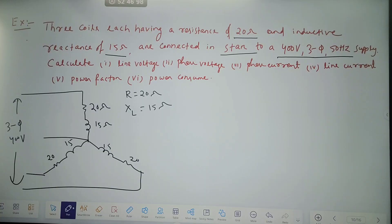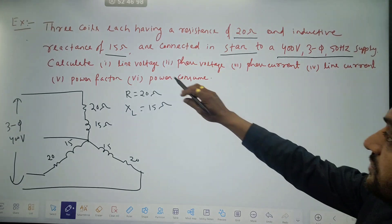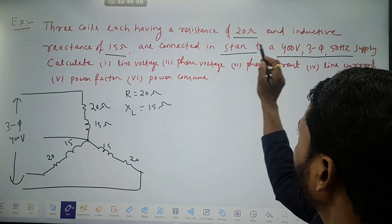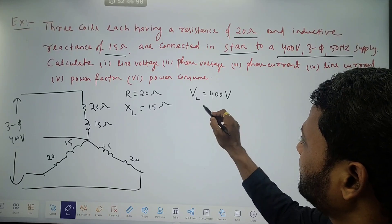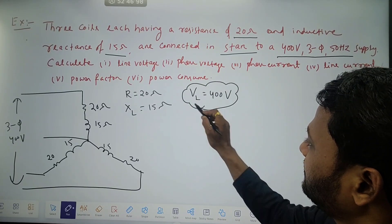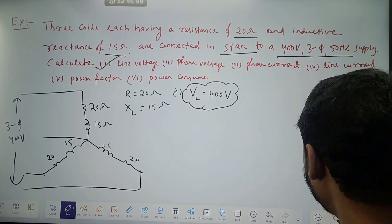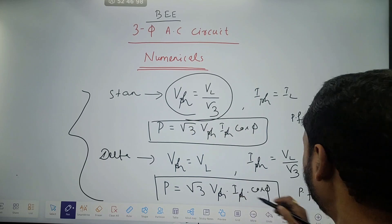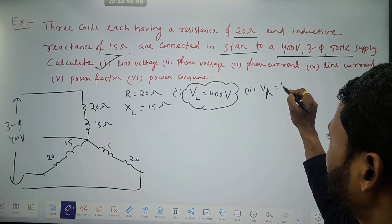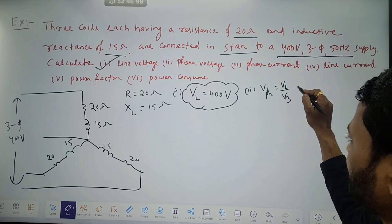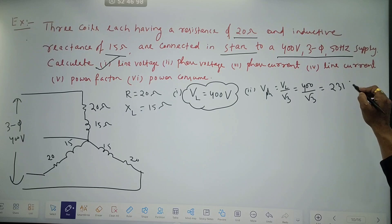So start with the question. We have to find out phase voltage, phase current, line voltage. First we will find out line voltage. The supply voltage which is given in the question is always line voltage — remember that. Since it is a star connected circuit, as I have told, in a star connected circuit phase voltage is line voltage by root 3. So phase voltage is 400 by root 3, which is coming around 231 volts.